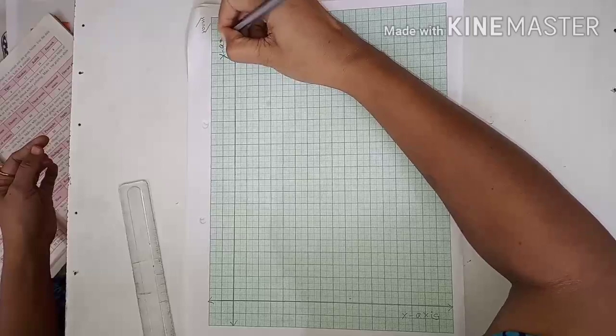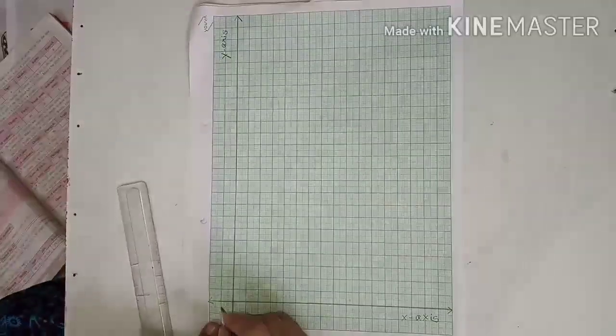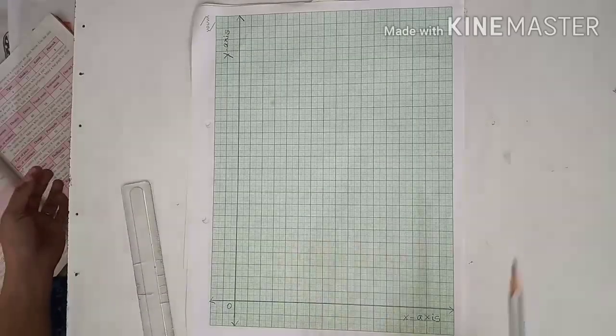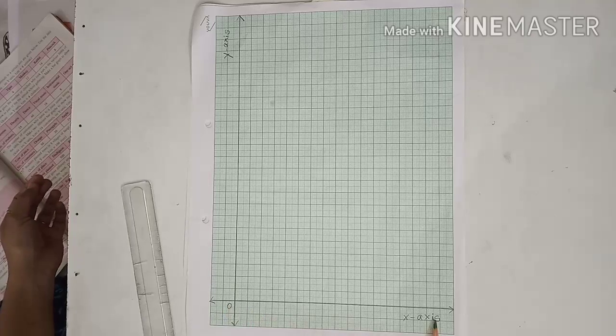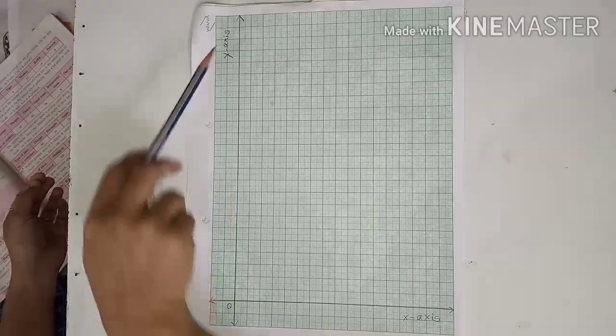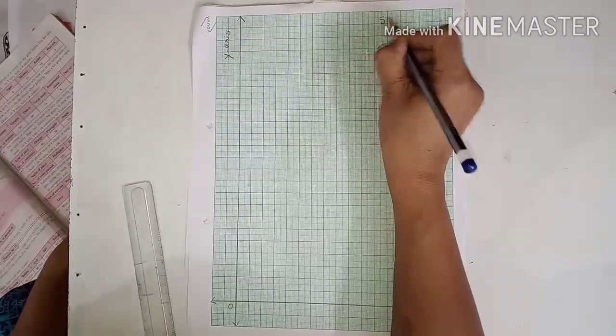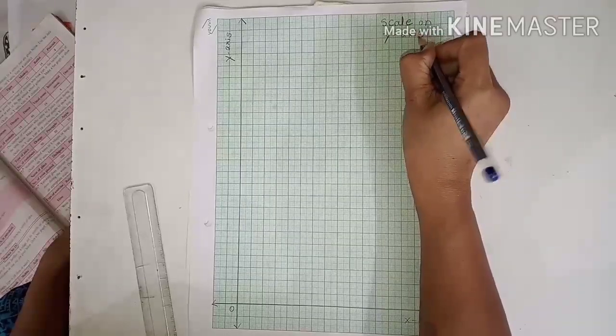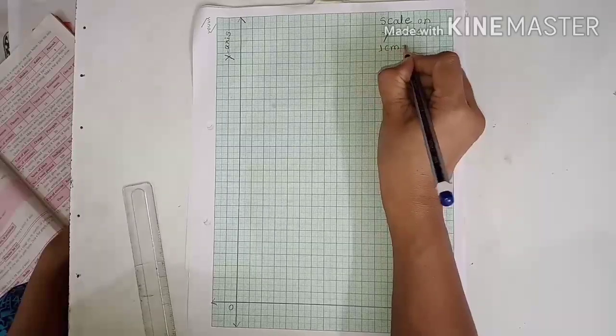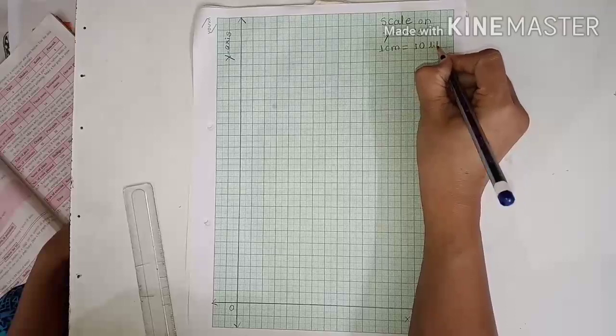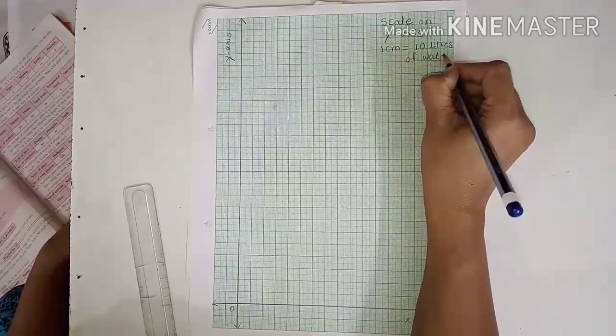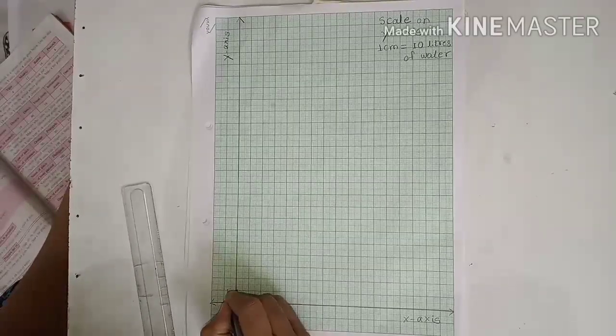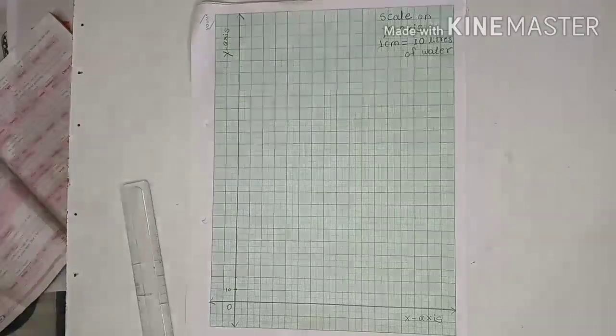And third one, scale. That is very important for the graph. Scale on y-axis that is given for this example: 1 cm is equal to 10 liters of water. This scale is very important. Now scale is given so we will write this on y-axis.